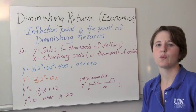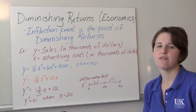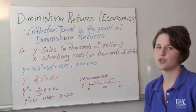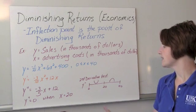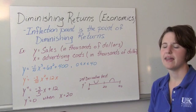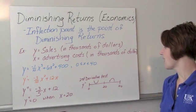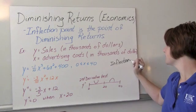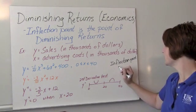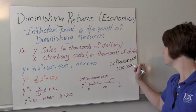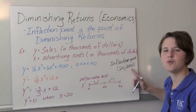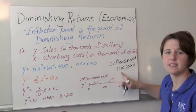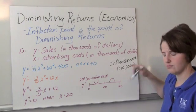To find the inflection point, we take the second derivative: negative three-fifths x plus 12. The second derivative equals zero when x equals 20. Doing the second derivative test, we get concave up to the left of 20 and concave down to the right of 20, so there's an inflection point at x equals 20. The output at that point is 2000, and since units are in thousands of dollars, that's two million dollars in sales — so spending twenty thousand dollars in advertising yields two million dollars in sales.